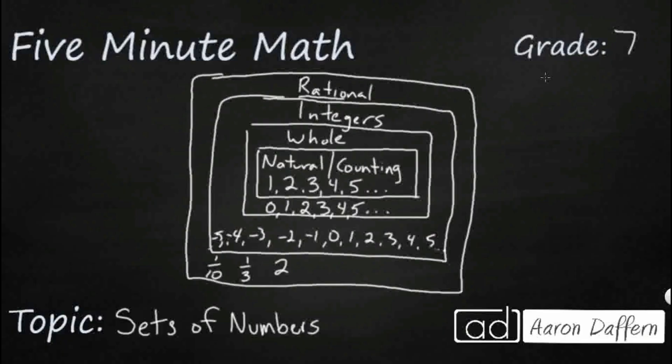Decimals, right? 2.1, because if I wanted to, I really could just represent this as a fraction, right? 2 and one-tenths, or I can represent that as 21 tenths. If I can represent it as a fraction or a ratio, I can put it into a rational number.